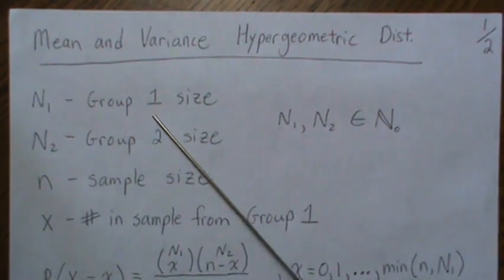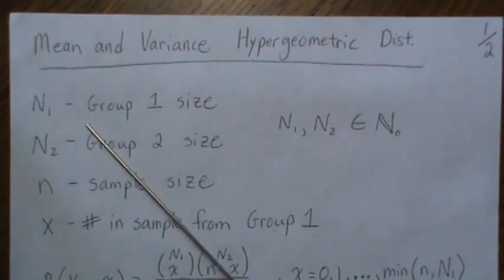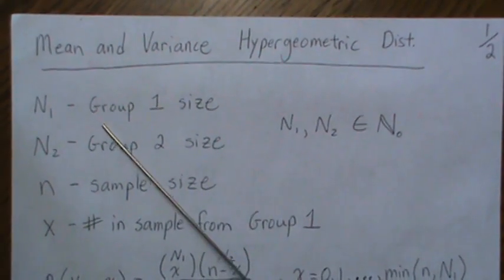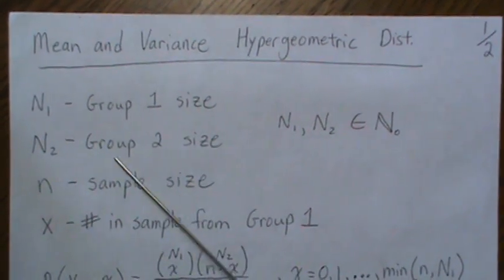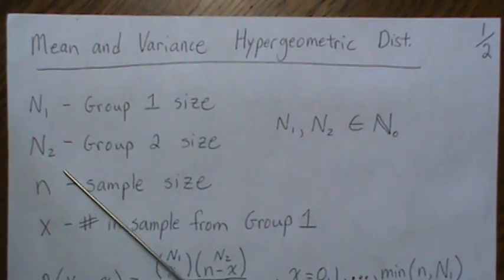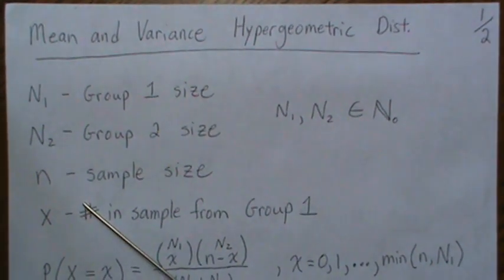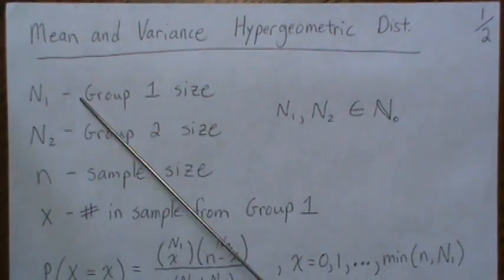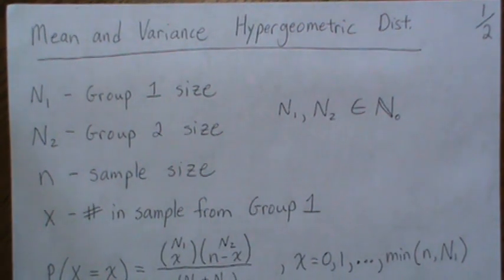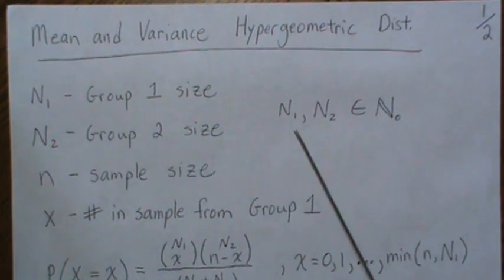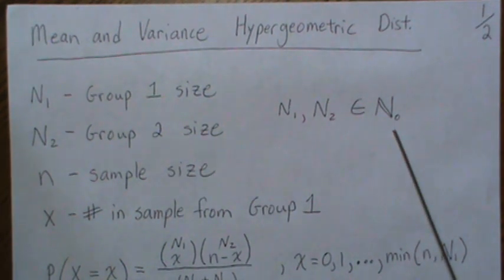We have N1 observations in group 1, so it's the size of group 1. In group 2, there's N2 observations, or group 2 size. N is the sample size that we take. And so these two are all mixed together.